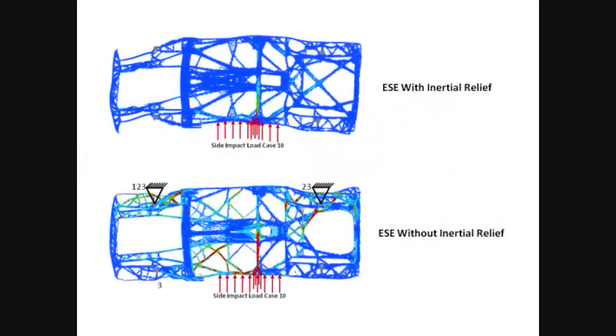The use of single point constraints, known as SPCs, affects the load paths and topology results. If SPCs are not needed, do not use them.